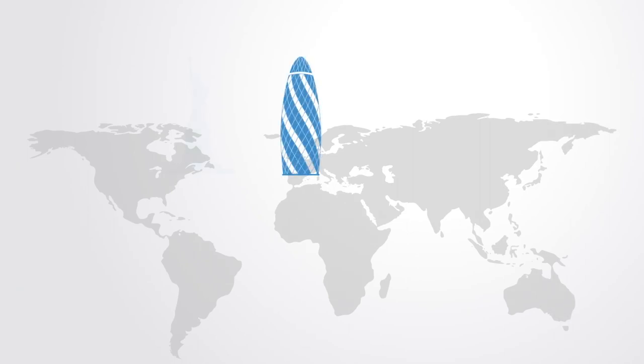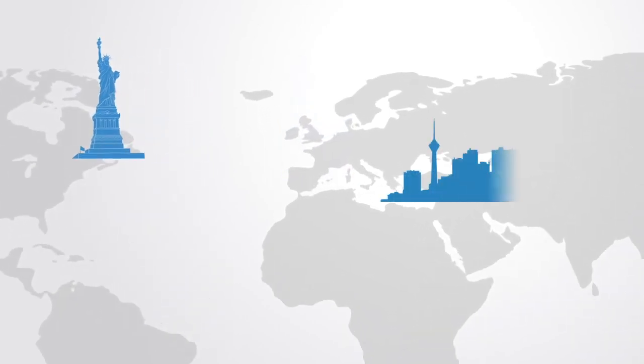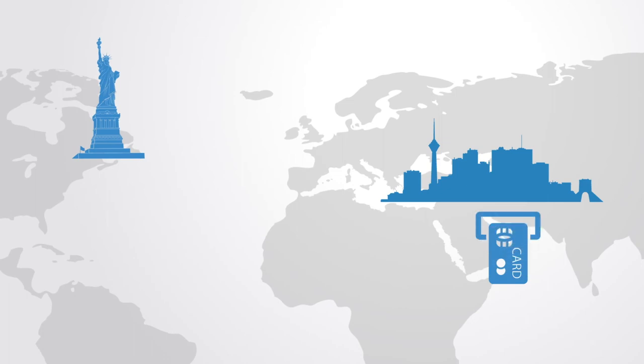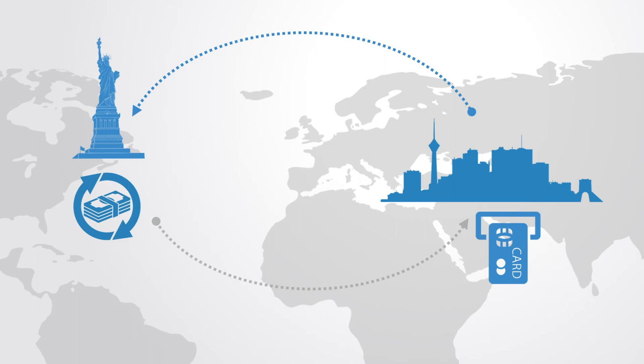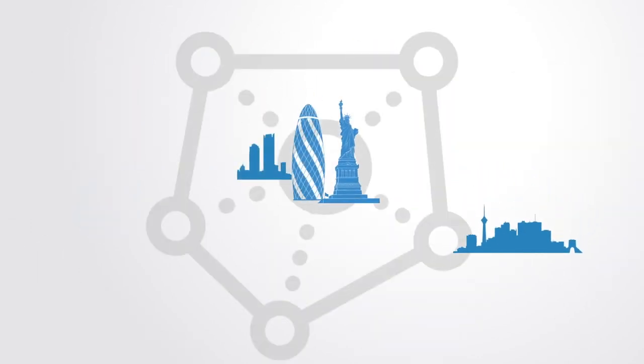London and New York are central nodes within the global financial system because many financial transactions are processed through these nodes, and that gives them the capacity to influence the system. For example, if you use a credit card to make a purchase in the city of Tehran in Iran, that transaction may be processed in New York. However, the opposite is not true. No financial transactions made in New York will be processed in Tehran. This gives central hubs like London and Hong Kong a certain kind of influence within the system that Tehran or Santiago, for example, do not have.